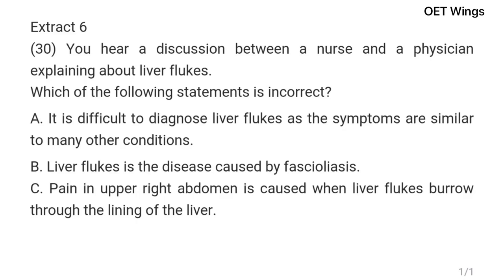There are chances that a person with liver flukes may never develop fascioliasis. Others may develop fascioliasis many years after the liver flukes entered the body. A person cannot transmit liver flukes to someone else, unlike other parasitic diseases. Liver flukes make their way from the intestines to the liver once they enter the body. To get into the liver, the liver flukes must burrow through the lining of the liver, causing pain in the upper right abdomen. The two types of liver flukes that can affect people are Fasciola hepatica and Fasciola gigantica.